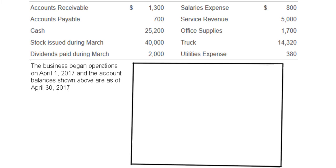We'll do the statement of retained earnings next, not the balance sheet, like I said at the end of the previous video. So you're done looking at the income statement for your own personal business, or maybe you're looking at the financial statements for a large public corporation — you can find those on the internet. Next, what you might want to look at is the statement of retained earnings.